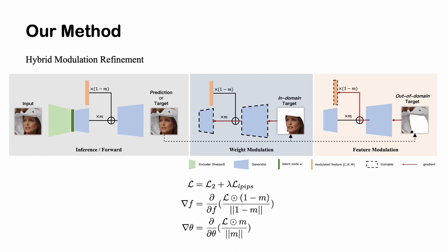For hybrid modulation refinement model, we refine in-domain areas and out-of-domain areas by weight and feature modulation respectively. Black lines indicate forward flows and red arrows represent gradient flow.